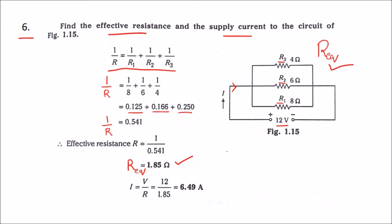Then, we need to find the supply current. We know the current-voltage-resistance relationship: I equals V by R. Now, we know the supply voltage is 12 and we found the equivalent resistance is 1.85. By calculating this, we get the current 6.49 amps.